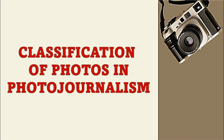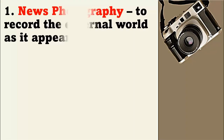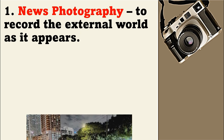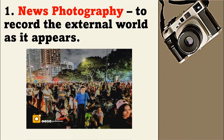I also discussed some classifications of photos in photojournalism. The first is news photography. When we say news photography, it is to record the external world as it appears — meaning we showcase what is happening in our society that affects the lives of citizens, either positively or negatively. For instance, this picture shows a lot of people lined up at Quirino Grandstand during the time of the Parade of the Black Nazarene in Manila — a current event affecting the lives of citizens and showcasing their belief in the Black Nazarene.